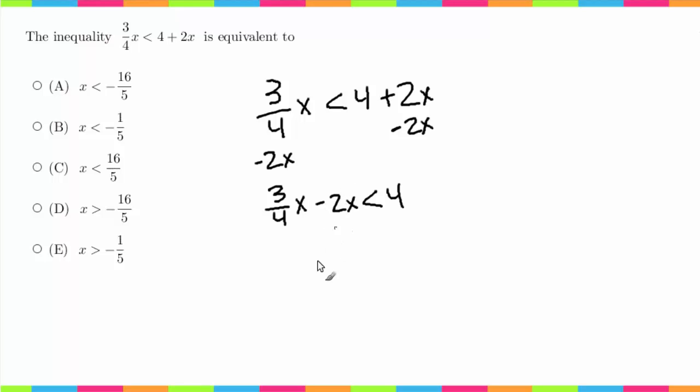Now right here I'm gonna get a common denominator, so I'm gonna do 3/4x minus 8/4x is less than 4. I'm gonna get negative 5/4x is less than 4, and now to get rid of this negative 5/4x I'm gonna multiply by the reciprocal.